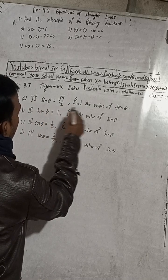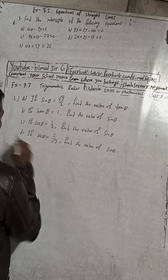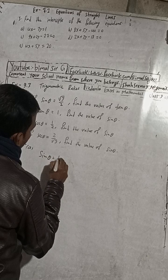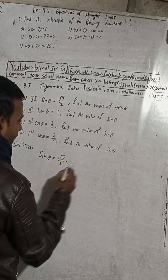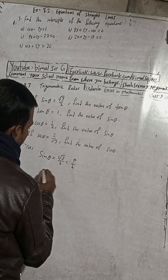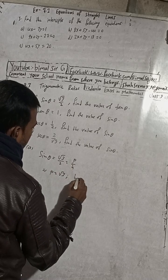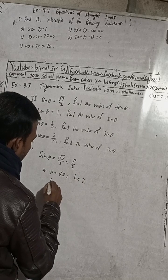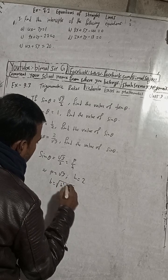So sin θ = √3/2. This implies P is equal to √3 and H is equal to 2. P and H are given, so we have to find B. By the Pythagorean theorem, B is equal to root under H squared minus P squared.